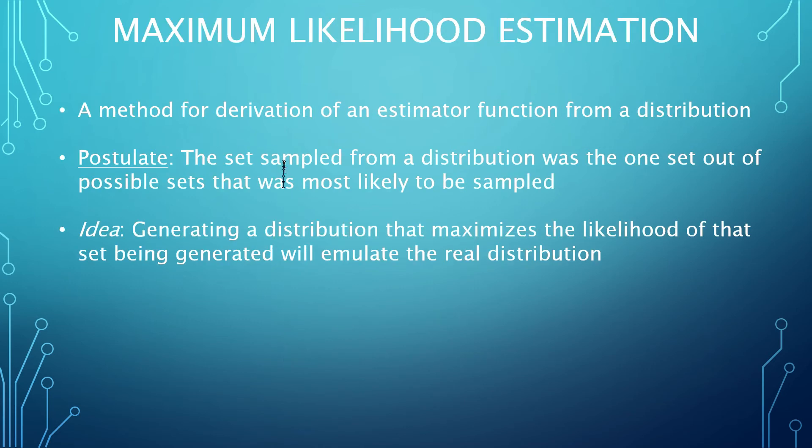At this point in the text, multiple estimators have been presented, but we don't have a methodology for developing them for a new distribution other than guessing. We need some principles from which we can have a strategic approach to developing estimator functions. Maximum likelihood estimation is the most common such principle. The idea of this principle is that if we sampled a particular data set from a distribution, then that set must have been the most likely set of that size that could be drawn from that distribution. That's why it was sampled, because it was the most likely. With that idea, the probability distribution that we use as an estimator for the true distribution should maximize the probability of that set occurring.